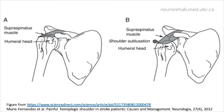Normal shoulder muscles help to hold and stabilize the upper arm or humeral head in the shoulder socket, as shown in Figure A. After a stroke, the muscles may be very weak and the weight of the arm itself may cause shoulder subluxation, where the humeral head drops slightly out of the socket, as shown in Figure B.